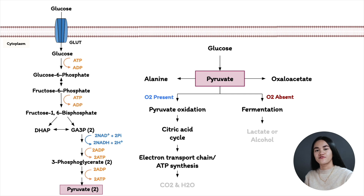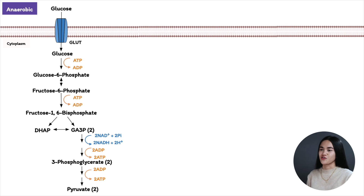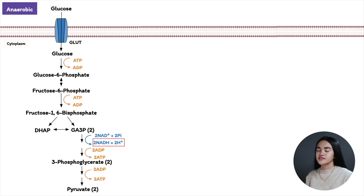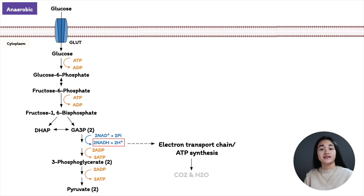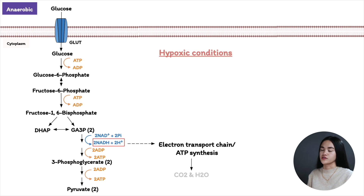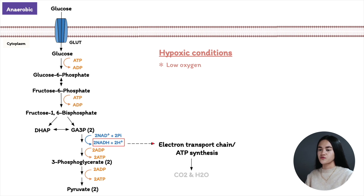Let's first take a look at what happens to pyruvate under anaerobic conditions, so when oxygen is not present. Referring back to the glycolysis lecture, NADH was formed in step 6 — the first step of the payoff phase — when glyceraldehyde 3-phosphate was dehydrogenated. This NADH is normally reoxidized to NAD+ by donating electrons to the electron transport chain, where oxygen is the final electron acceptor. So in a hypoxic condition with low oxygen, NADH cannot be reoxidized, leading to insufficient NAD+ to serve as the electron acceptor when glyceraldehyde 3-phosphate is oxidized, and that would stop glycolysis. So we need to reproduce NAD+ in another way.